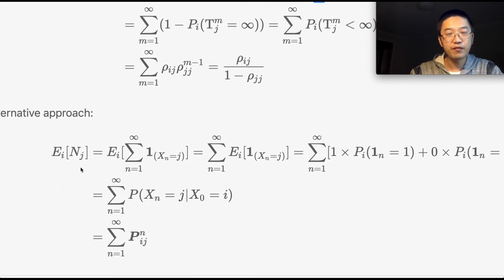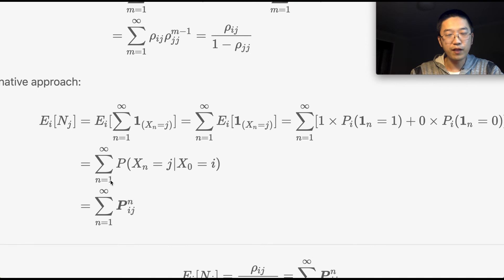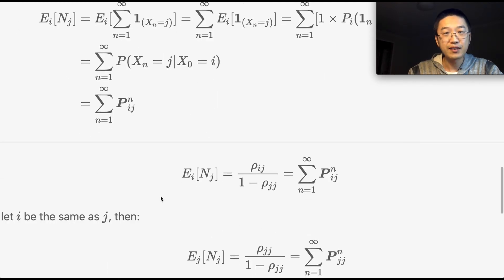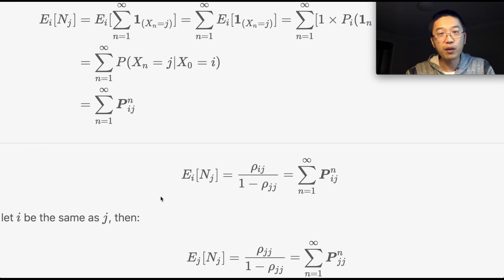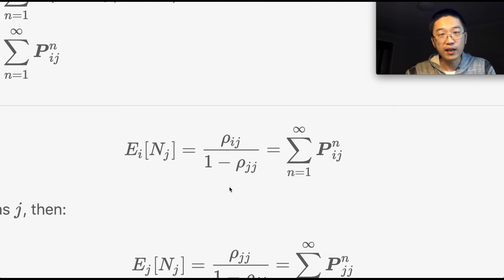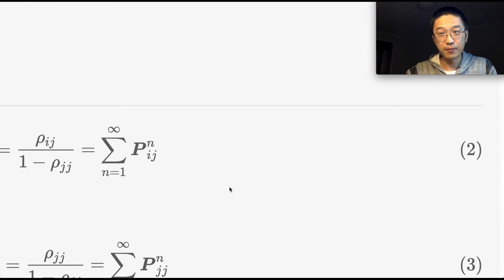The second approach: E[N_j] is the expectation of the sum of indicator random variables. Taking the expectation inside the sum, it becomes Σ_{n=1}^∞ P(X_n = j | X_0 = i), which equals the sum of the (i,j) entry of the Markov matrix P raised to the power n. So we have two representations: E[N_j] = ρ_ij / (1 − ρ_jj) = Σ_n (P^n)_{ij}. We label this Equation 2.